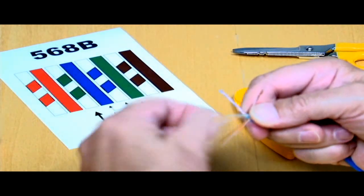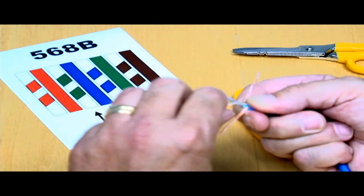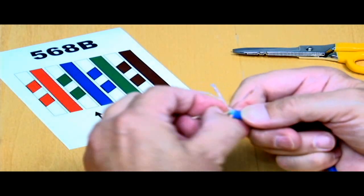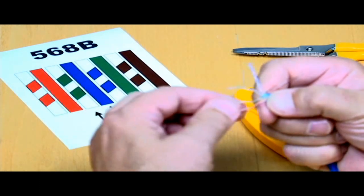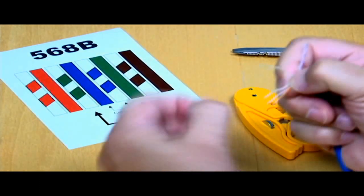If you look at the chart, you're going to see that the next conductor we need is the green conductor with the white stripe. So we'll lay that one down. Make sure I've got the right one. I have the wrong one. There it is, the green one with the white stripe.